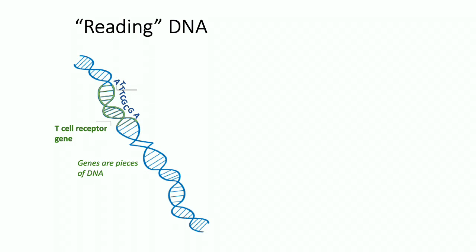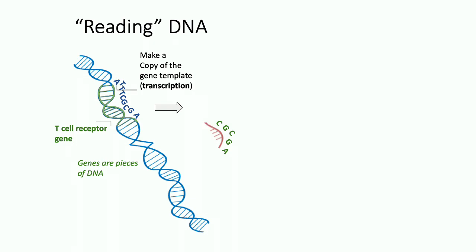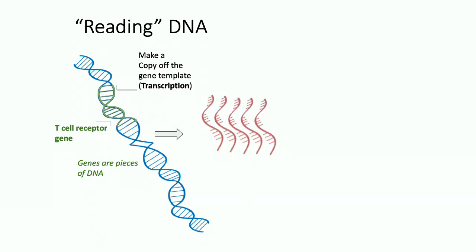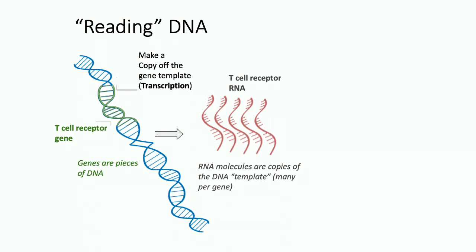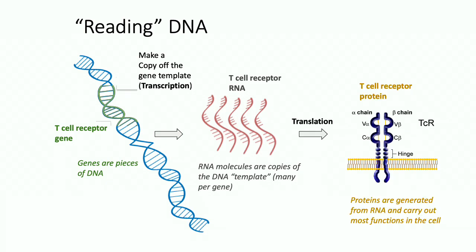Genes are basically small segments in our genome, comprising about 2% of it. In the process of transcription, the cell uses a gene as a template and copies it into an RNA molecule — it can make many of these molecules. This is what we call gene expression. The next step is translation, where the ribosome takes these RNA molecules and turns them into proteins. The proteins carry out most functions in the cell — for example, the T cell receptor protein sits on the cell surface and is very important for communication between the T cell and its environment.